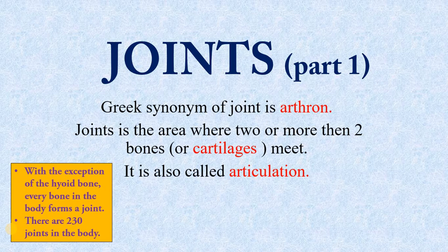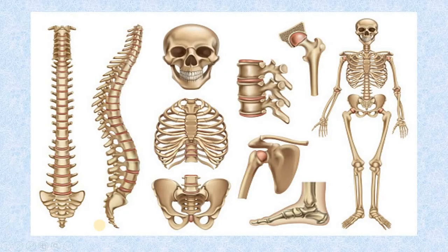In our body, the bones are connected at joints. One joint is called a higher bone. In our body, there are 230 joints. For example, in the skull, two bones are linked at a joint, then ribs also form joints.